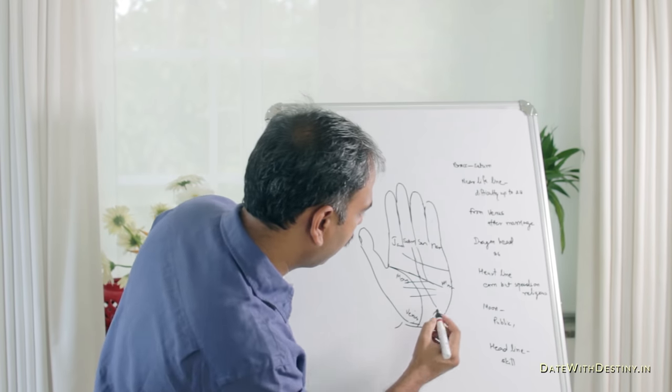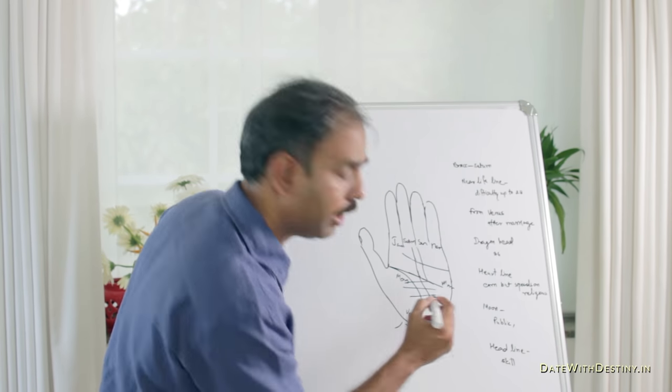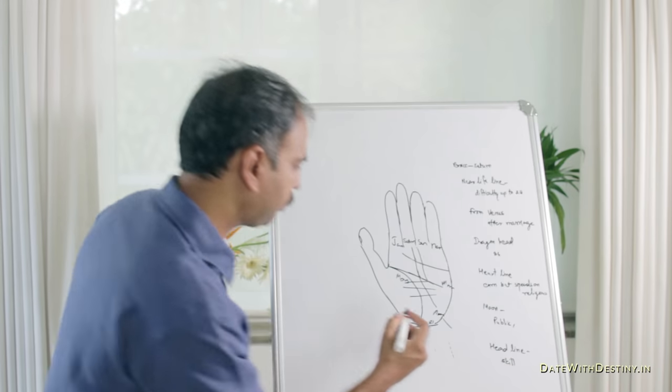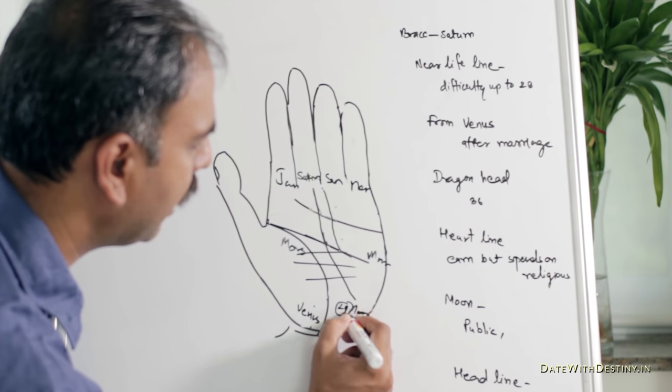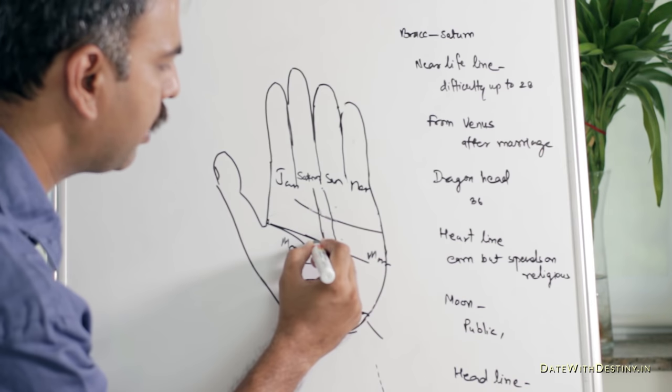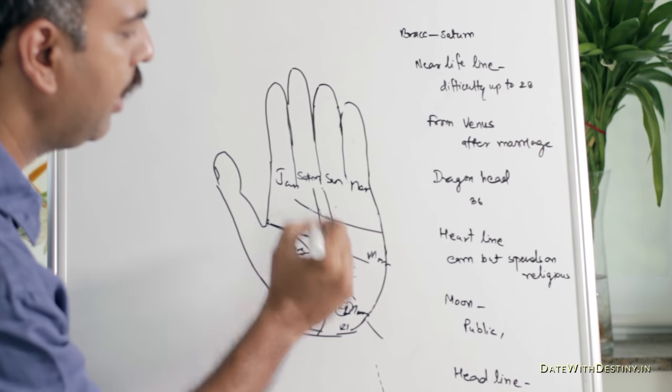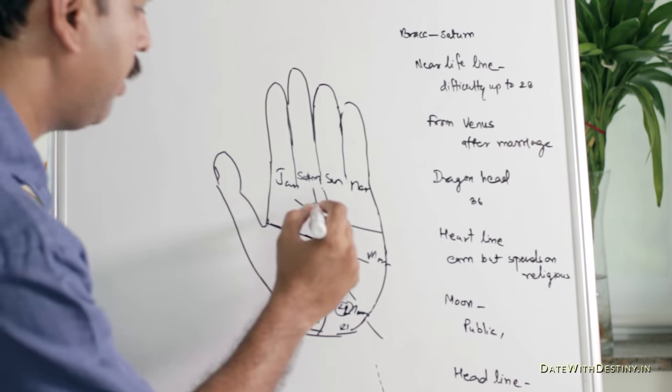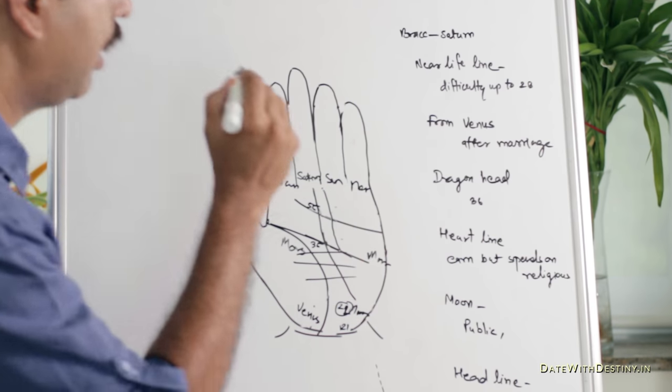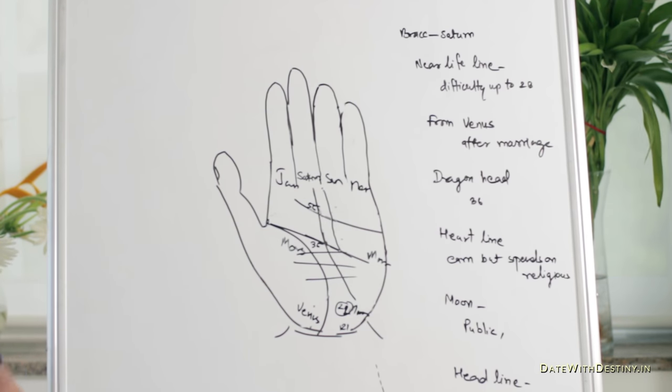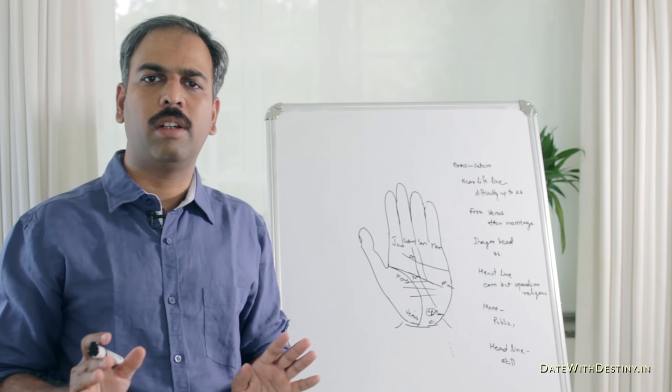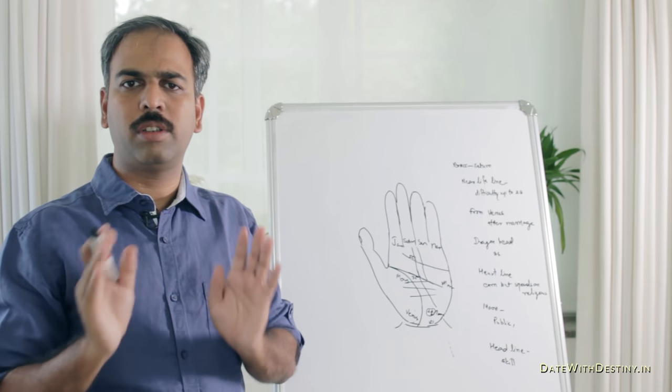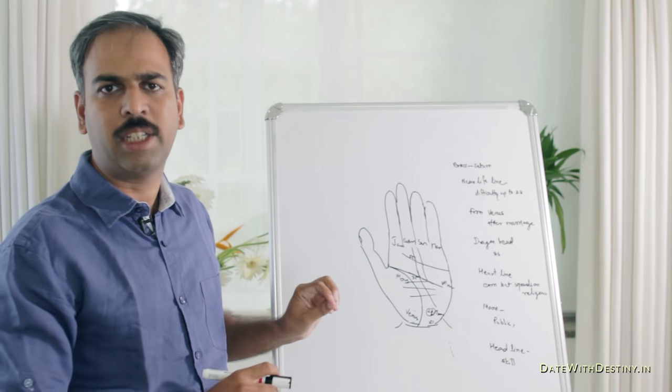And I am giving the age also. On the Moon, Fate Line starts at the age of 21. When it crosses Head Line, it is 35. And when it crosses Heart Line, it is 55. These ages are given arbitrarily. It is not compulsory in everyone's hand. But it has to be correlated with the type of person, other signs in his hand.